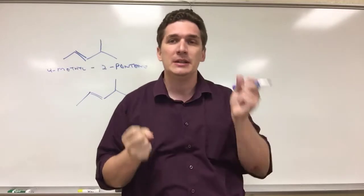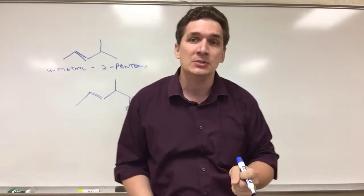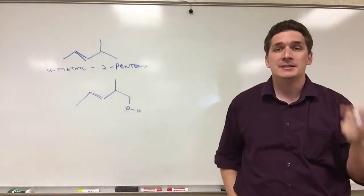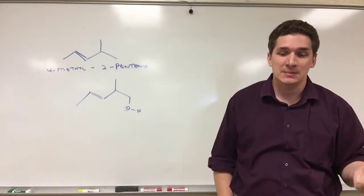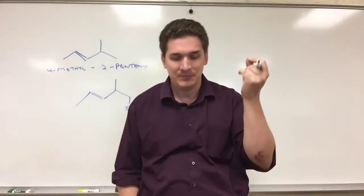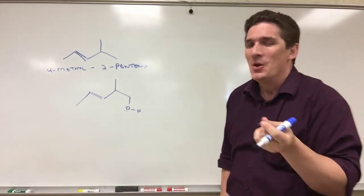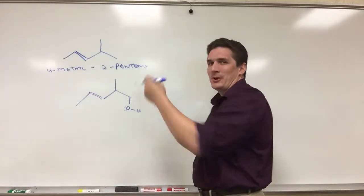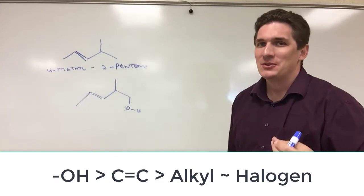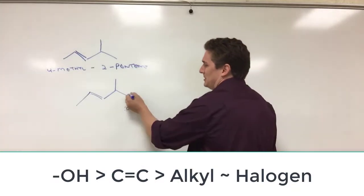Now let's say I really, as a student, absolutely hate you and I want to throw an alcohol on this. How does this change? Well, we need to designate the position of the alcohol, right? Well, okay. So this is where it's going to get hard. Alcohol is going to take priority over the double bond. So this is going to end up being carbon-1.